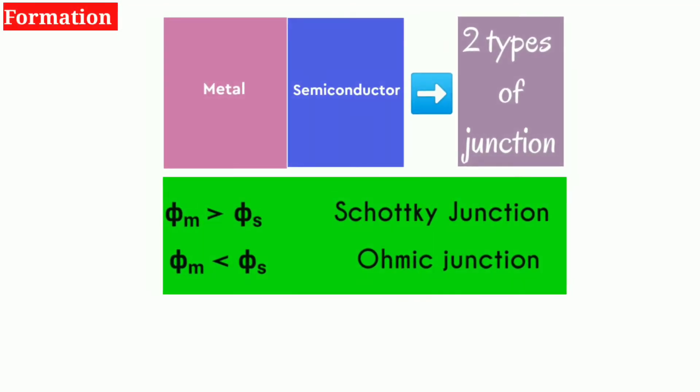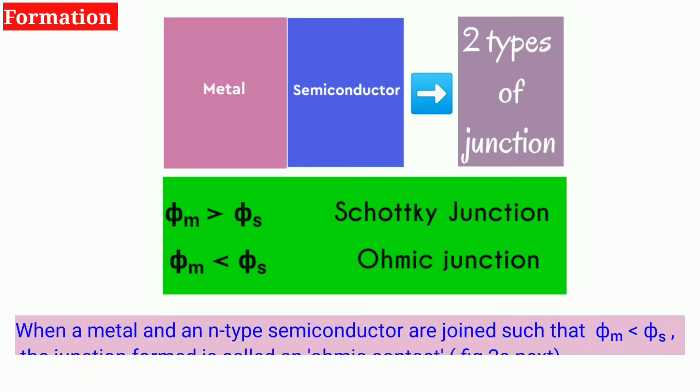We know that a Schottky junction is formed when the semiconductor has a lower work function than a metal, that is phi s is less than phi m. When the semiconductor has a higher work function the junction formed is called an ohmic junction. Thus for ohmic junction phi m is less than phi s.